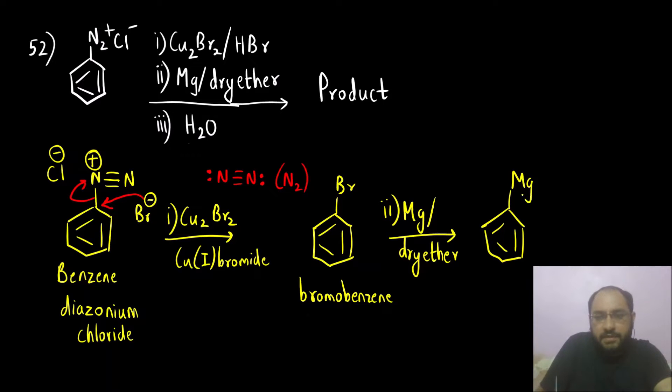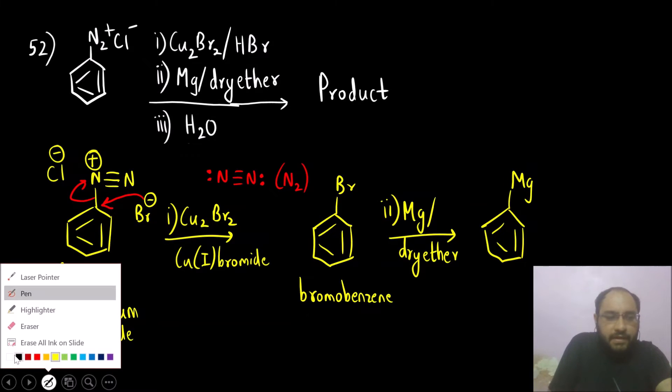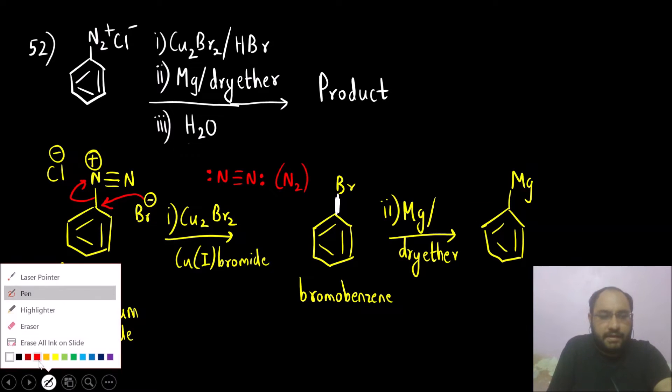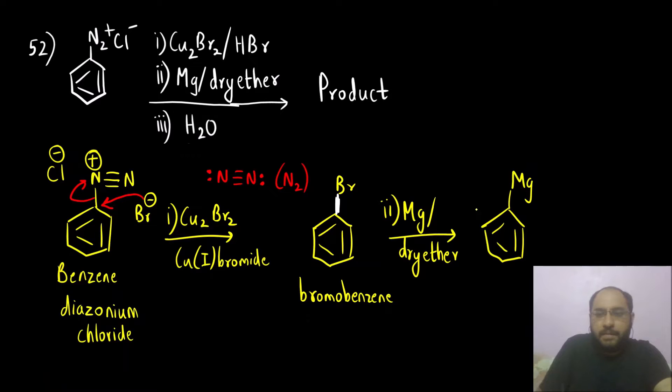Magnesium is inserted between this C-Br bond. It is inserted between this C-Br bond and what do we get is we get magnesium, benzene, magnesium bromide. This is what RMgX. R is what? Benzene here. This is Grignard reagent. This step is called as formation of Grignard reagent.